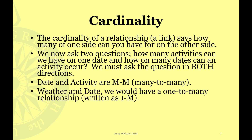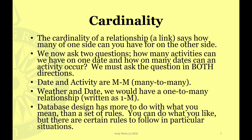Weather and date would have a one-to-many relationship, because a particular type of weather could occur on many dates. But we couldn't have a particular type of date with many weathers, unless we were keeping track all the way through the day. Database design has more to do with what you mean than a fixed set of rules — you can do what you like, but there are certain rules to follow in particular situations, and one of those is asking the cardinality question in both directions.